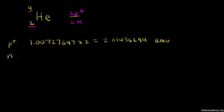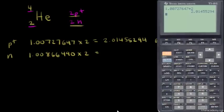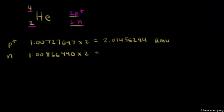A neutron has a mass in AMUs of 1.00866490. And we have two neutrons, so we have to multiply this number by two. So 1.00866490 times two gives us 2.01732980 AMUs.